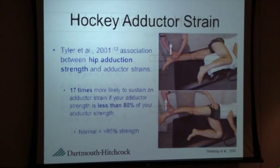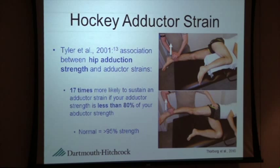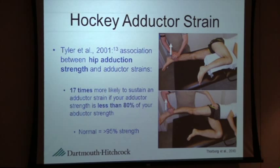A landmark study for hockey players in 2001 from NISMAT in New York City found a large association between hip adduction strength and abductor strength. They found that you are 17 times more likely to sustain an adductor strain if your adductor strength is less than 80% of your abductor strength. Normally, people who don't get adductor strains have a strength ratio of about 95%, so there's a significant reduction in relative strength in those who are injured.